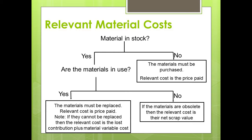So you use a material all the time for different products and different projects, and you need some material — let's say 200 kg for a new job. Whatever the cost would be, 200 kg times £10 for example, it is all going to be a relevant cost, because even if it's in stock or not in stock, it doesn't matter — it's still relevant.